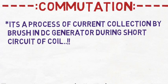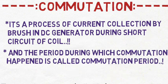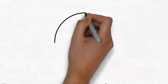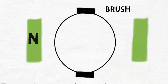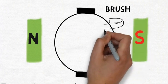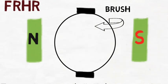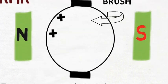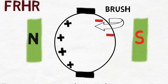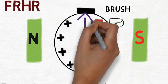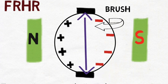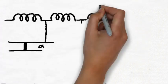Commutation is a process of current collection by a brush in a DC generator during short circuit of a coil. The period during which commutation happens is called the commutation period. Before starting the commutation process, we have to first understand the current direction in an armature. This is a two-pole generator which rotates continuously. The conductors in an armature carry current, and the current direction can be determined by Fleming's right-hand rule.